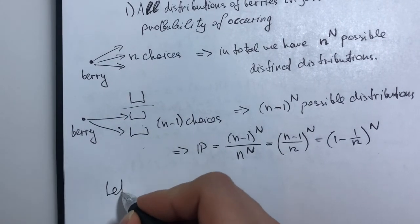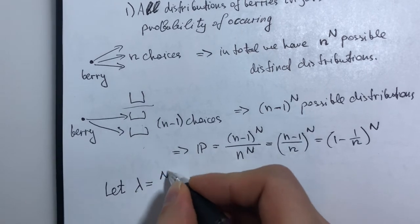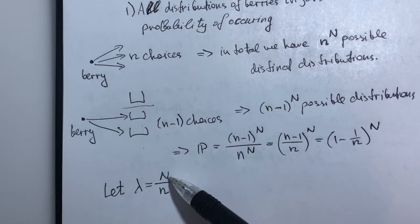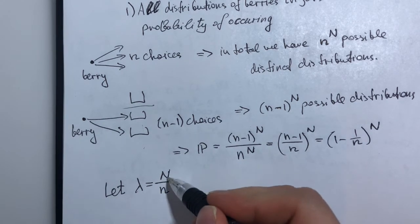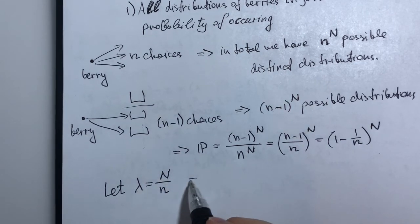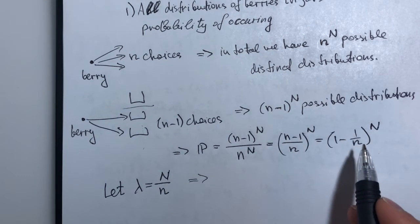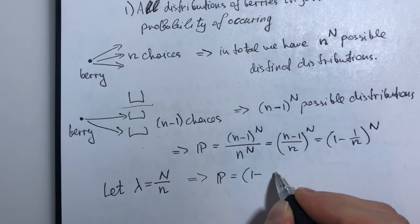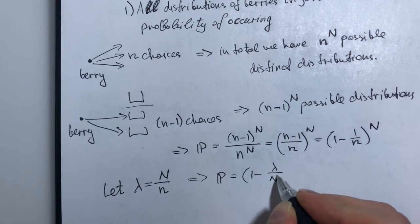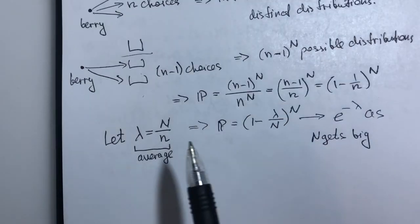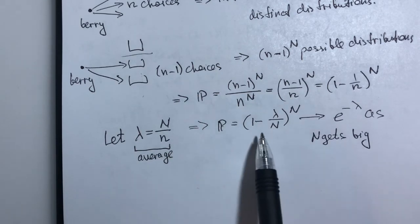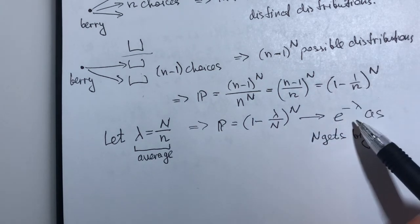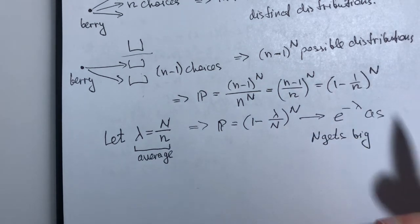Well, let us introduce lambda, which is going to be an average number of berries per jar. Then if we rewrite this formula in terms of lambda, we get that our probability is 1 minus lambda over n to the power n. So once more, this is our average, and this fraction by a very well-known limit tends to e to the minus lambda as n gets big.